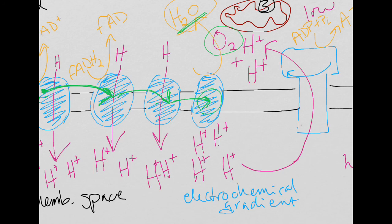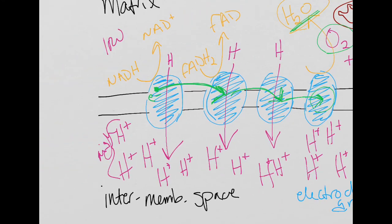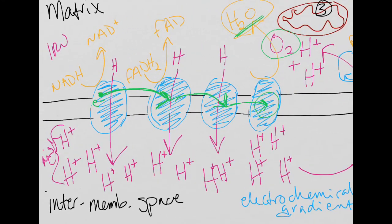However, if oxygen wasn't there to accept the electrons the whole thing wouldn't work. So, that's the end of this. That's the electron transport chain. And I'll be talking more about what happens when we don't have oxygen in a later video. So, that's the end of this.